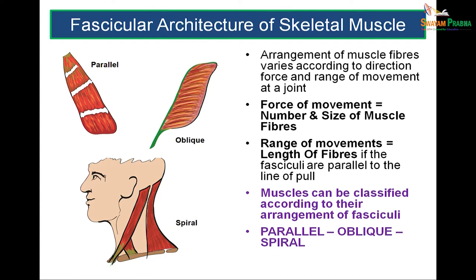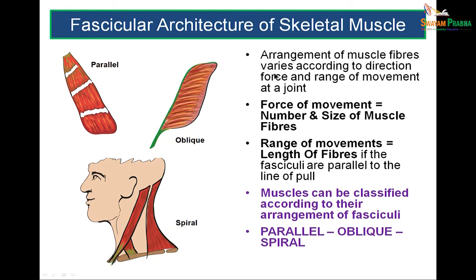Now let us talk about the architecture and structure of skeletal muscle. The arrangement of fasciculi could be parallel, oblique, or spiral. The force of movement is always proportionate to the number and size of muscle fibers. Range of movement depends totally on the length of the fibers. Muscles could be classified on their arrangement of fasciculi into parallel, oblique, and spiral fasciculi. In parallel arrangement, fibers are parallel to each other; oblique fibers are at an angle to the long axis; and spiral arrangements are twisted.